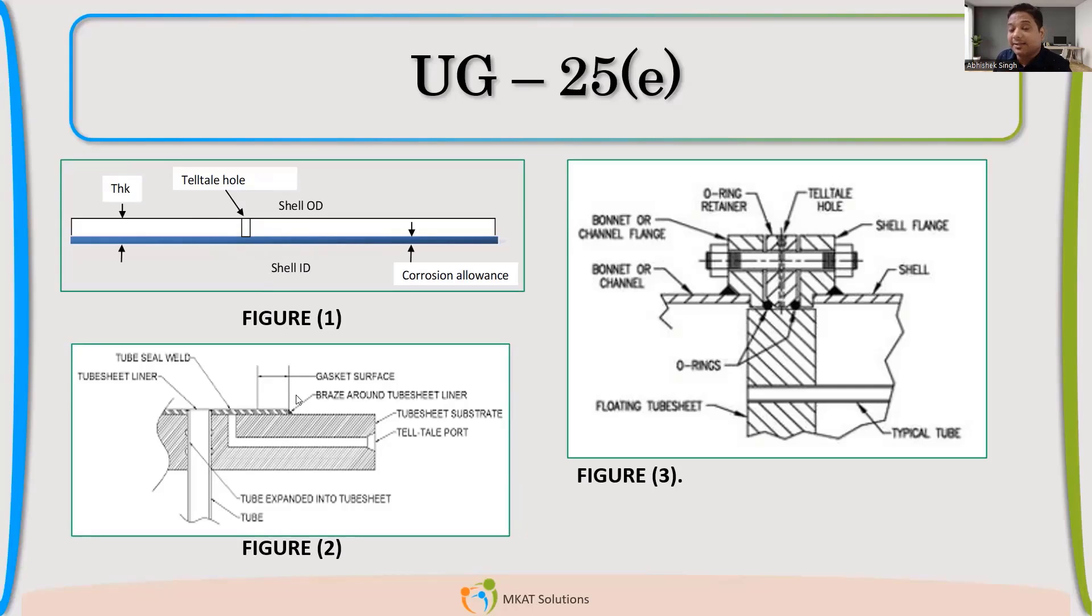The second is that instead of Corrosion Allowance, there may be lining. So lining also may get corroded or damaged. So when the Corrosion happened, same philosophy will work for here also. We'll connect a telltale hole which will tell us that now there is no lining and you should replace that part. That is the second use.